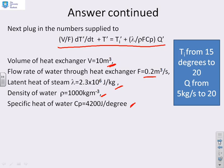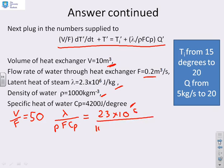So V/F is going to be 10 over 0.2. That's going to be 50. Next, I can do λ/(ρFCp). So what's that going to give me? It's going to give me 2.3 times 10^6 over 10^3 times 0.2 times 4.2 times 10^3. And that's going to give me 2.74.